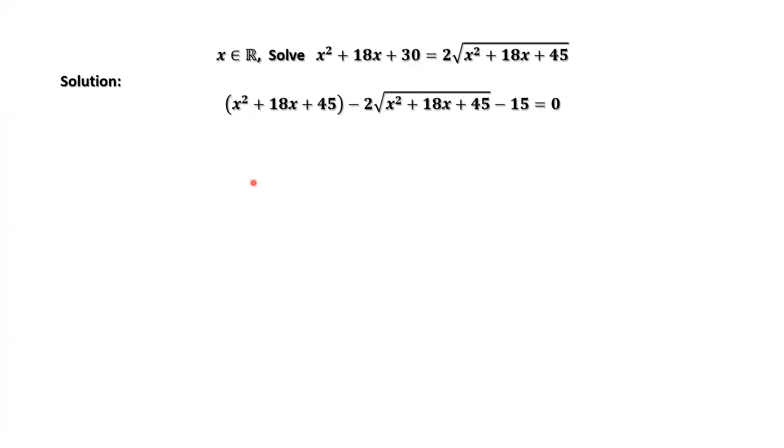Therefore, we define a new variable: y equals square root of x squared plus 18x plus 45. This implies the first term is y squared. Therefore, we have this quadratic equation: y squared minus 2 times y minus 15 equals 0.